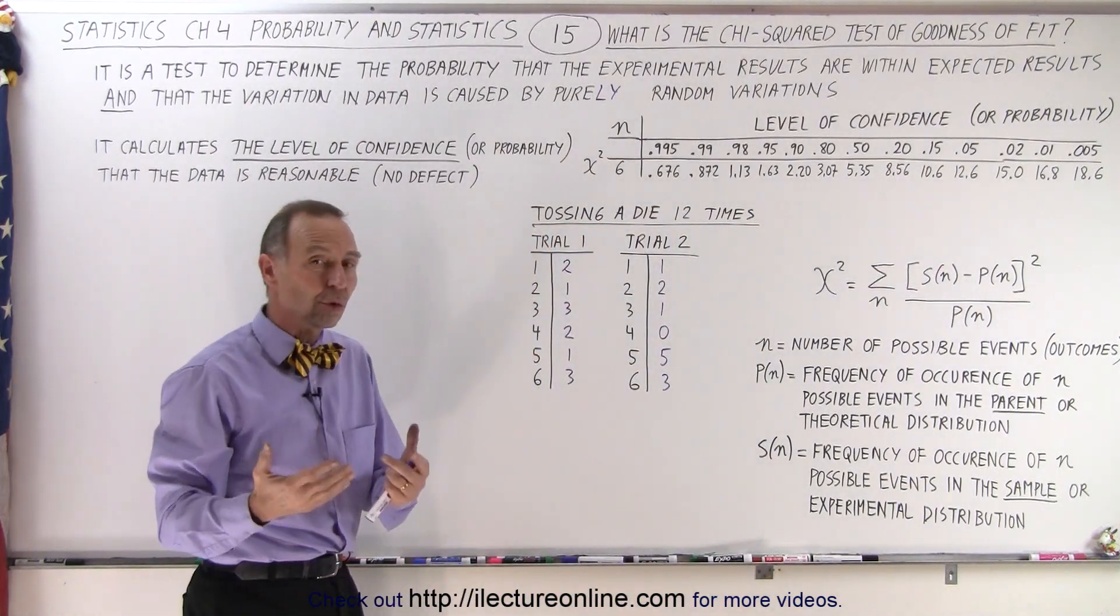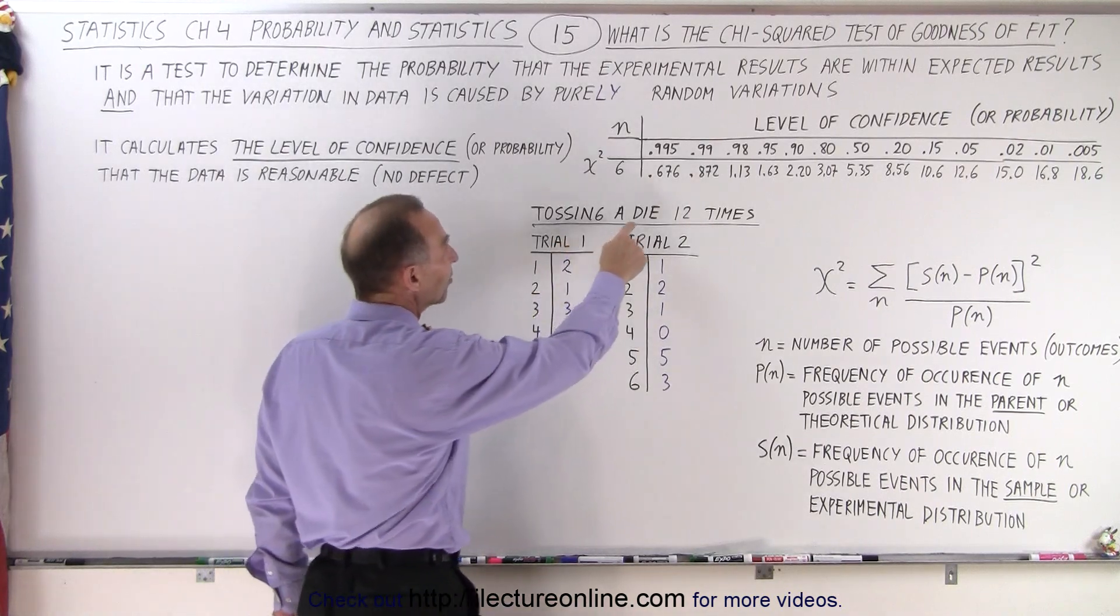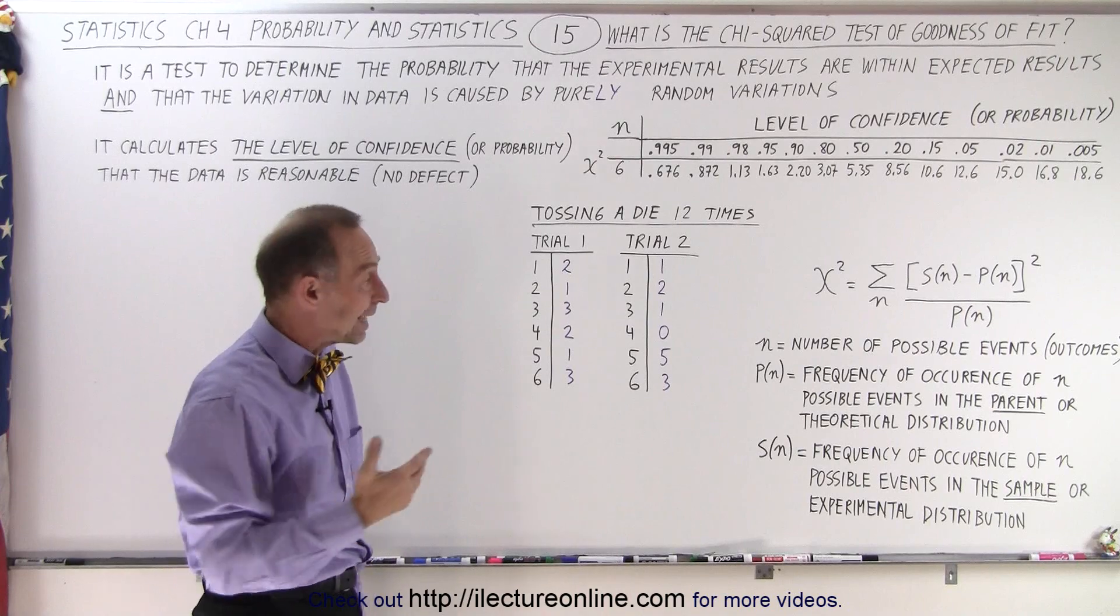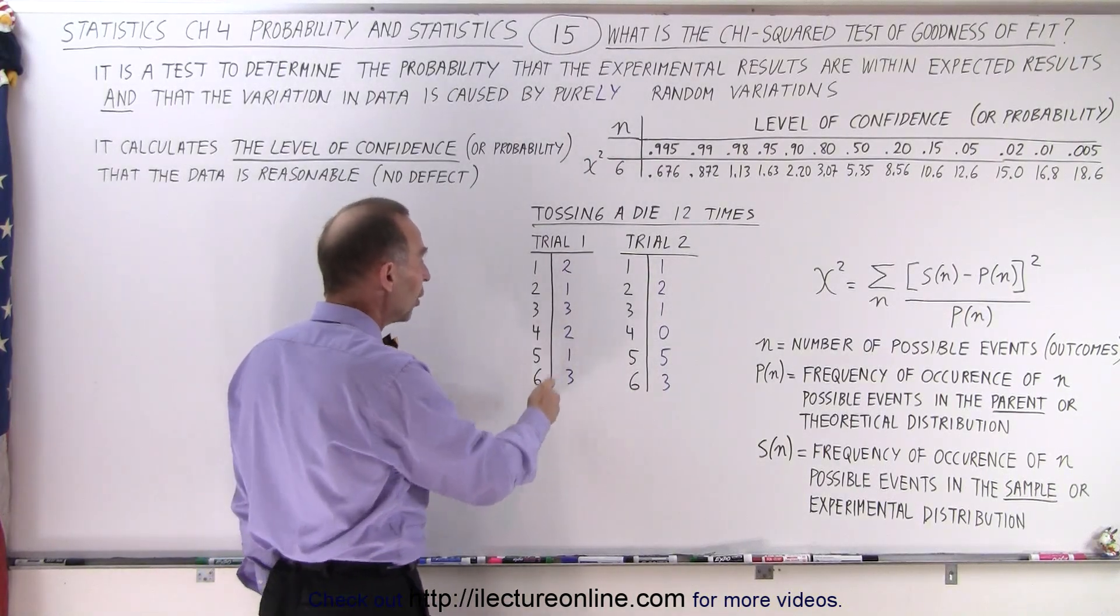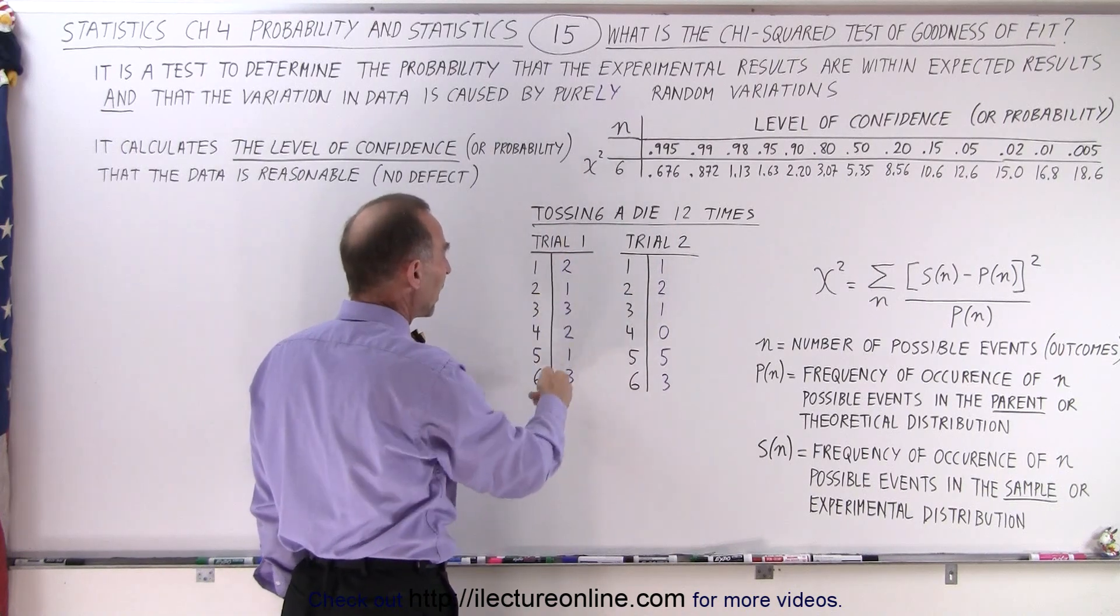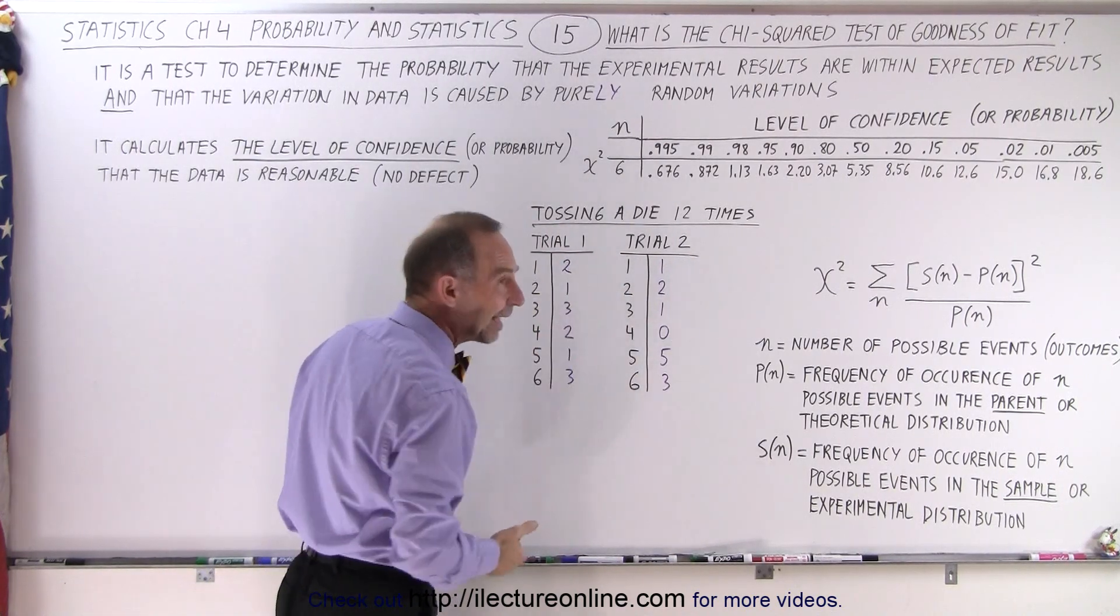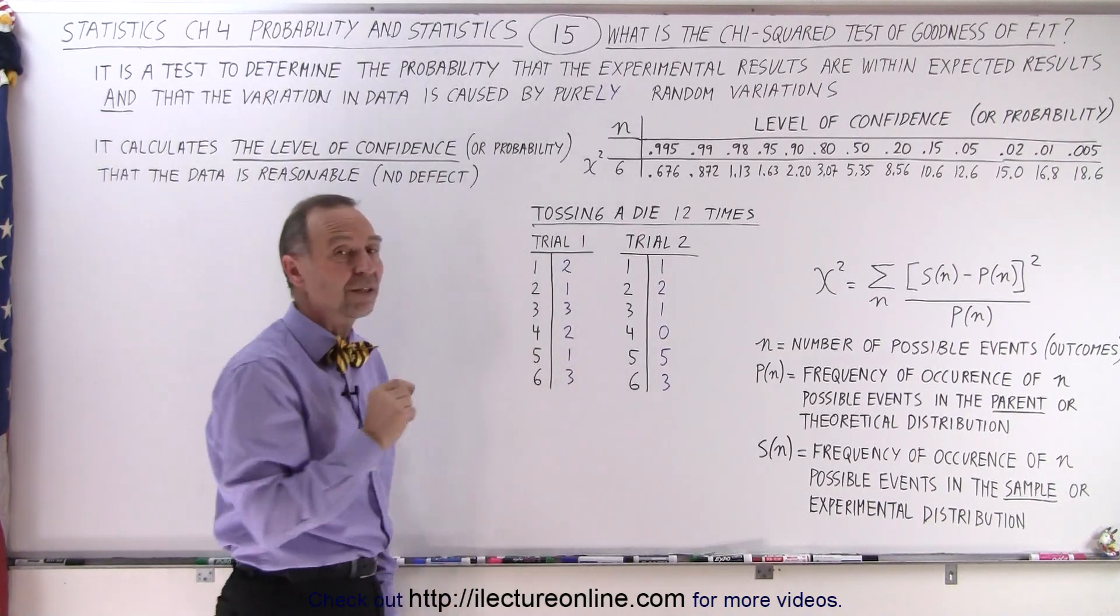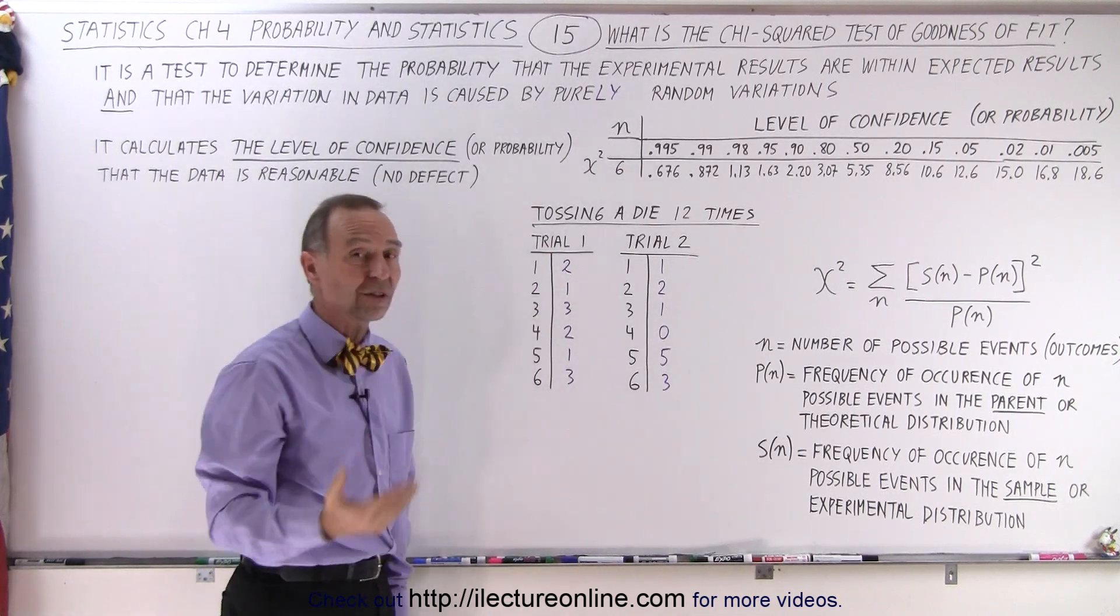Now here we want to show you some examples of some data we might want to look at. So here we're tossing a single die 12 times. So that means that on average, we'd expect each of the six numbers to appear twice. On our first trial, we're not that different from what we'd expect. 2, 1, 3, 2, 1, 3. So you can see that the deviations are no more than one away from the expected value for any of the values, and two of them are right spot on where we expect them to be.